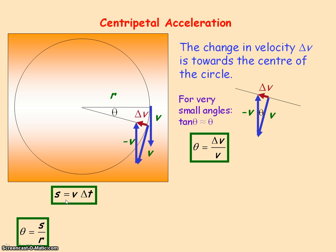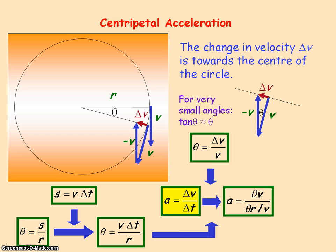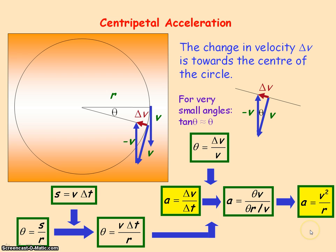The distance travelled by the object equals its speed times the time taken. Substituting the equation for distance travelled into our equation for theta gives us theta equals vt divided by r. Since acceleration equals the rate of change of velocity, delta v divided by delta t, we substitute for delta v and delta t: delta v equals theta times v, and delta t equals theta r divided by v. The theta cancels on the top and bottom, leaving v divided by r divided by v, which simplifies to v squared divided by r — our equation for centripetal acceleration.